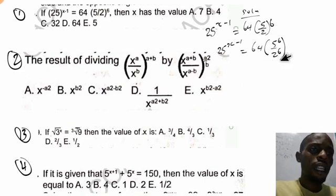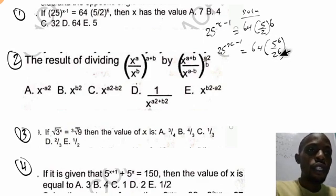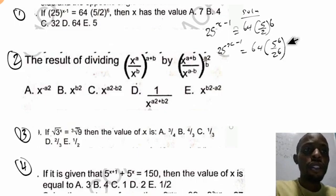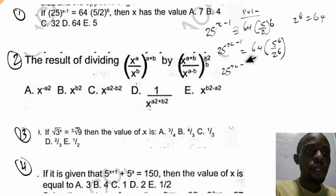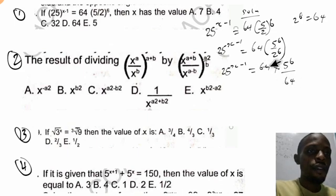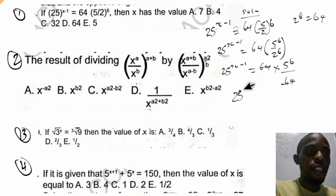Now, 2 raised to the power of 6 means 2 multiplied by itself 6 times. As I explained in the previous class, 2 times 2 times 2 times 2 times 2 times 2 gives us 64. So 2 raised to the power of 6 equals 64. This 64 in the denominator cancels with the 64 in the numerator, and we are left with 25 raised to the power of s minus 1 equals 5 raised to the power of 6.